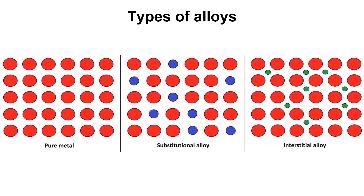Here you can see the types of alloys. The first case is the representation of a pure metal, where all the atoms are the same. Then there are two types of alloys: substitutional alloy and interstitial alloy.